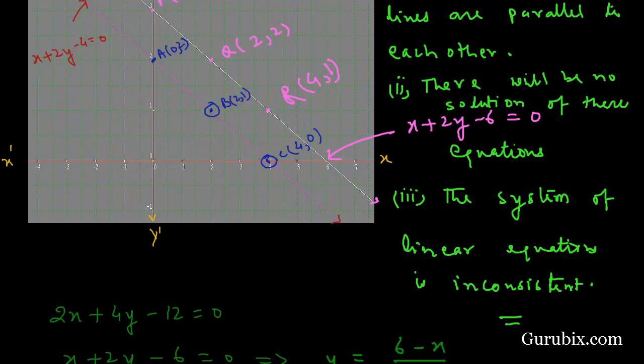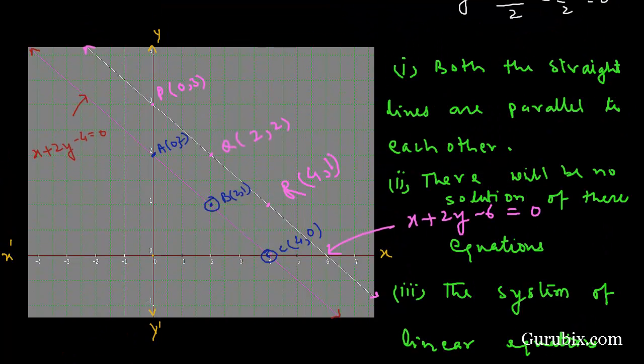Finally, we conclude that the two rails will never meet each other. This is the solution of the example. Thank you.